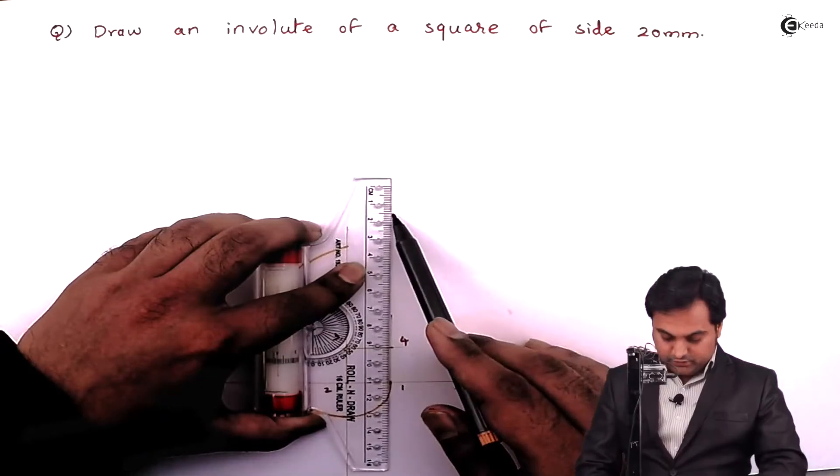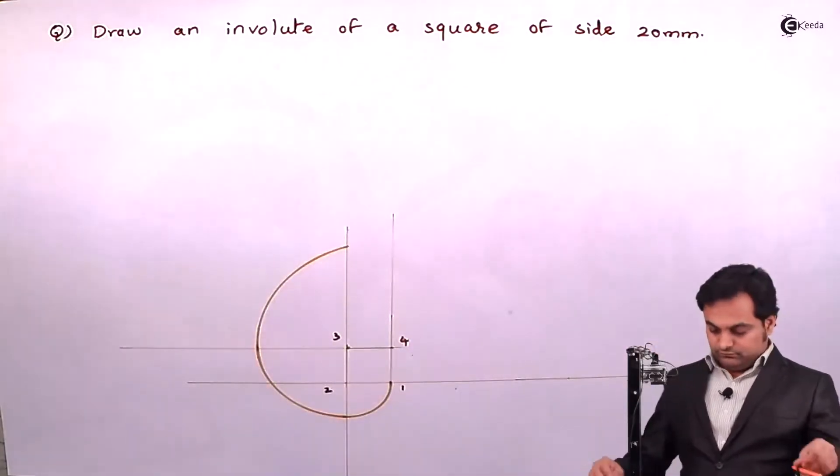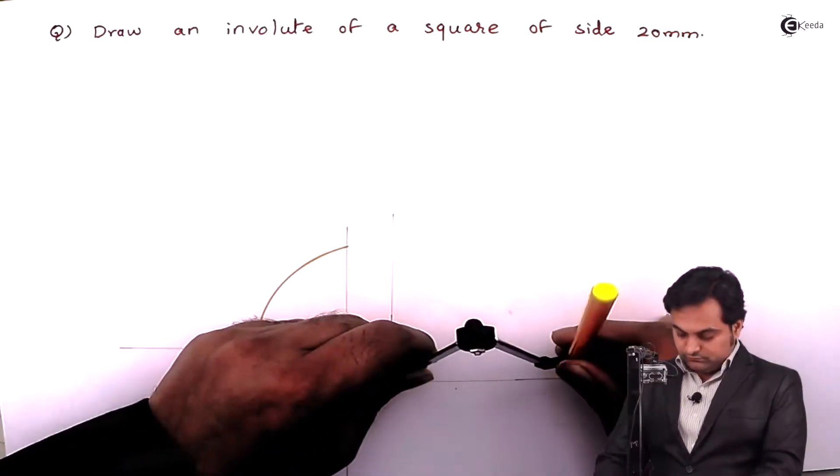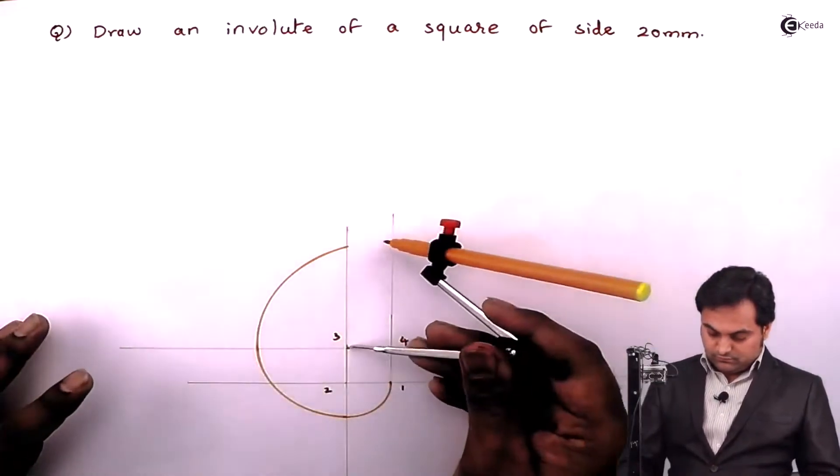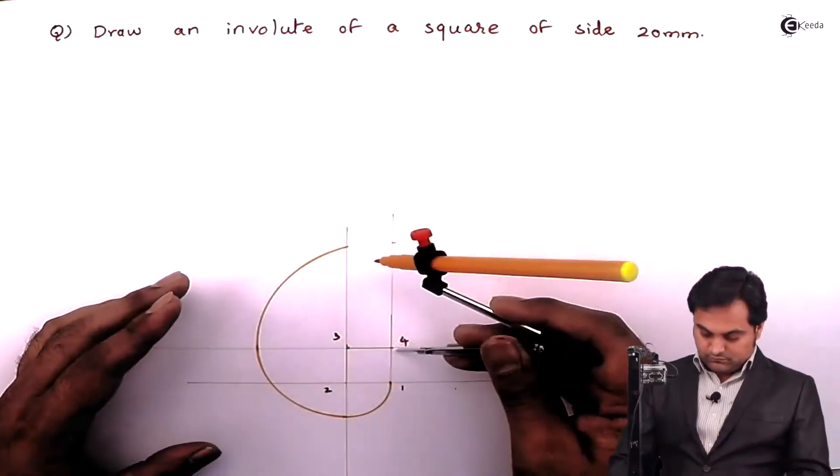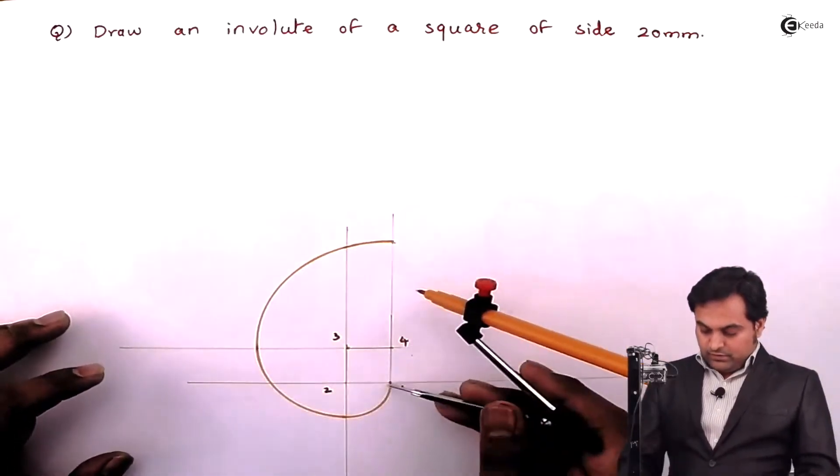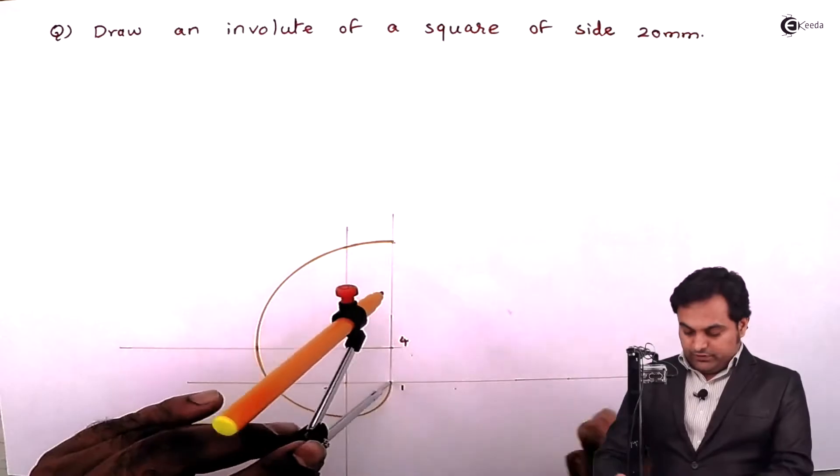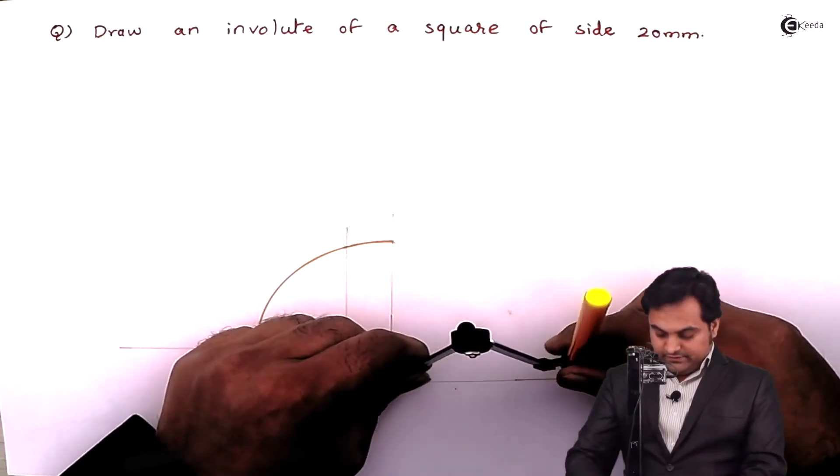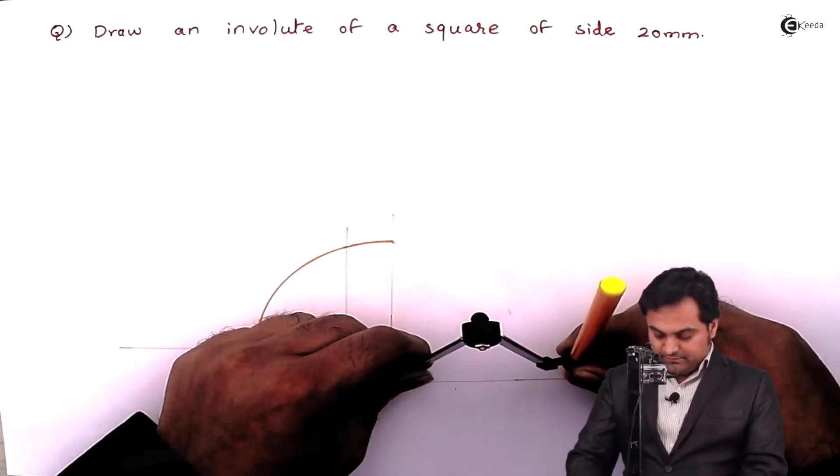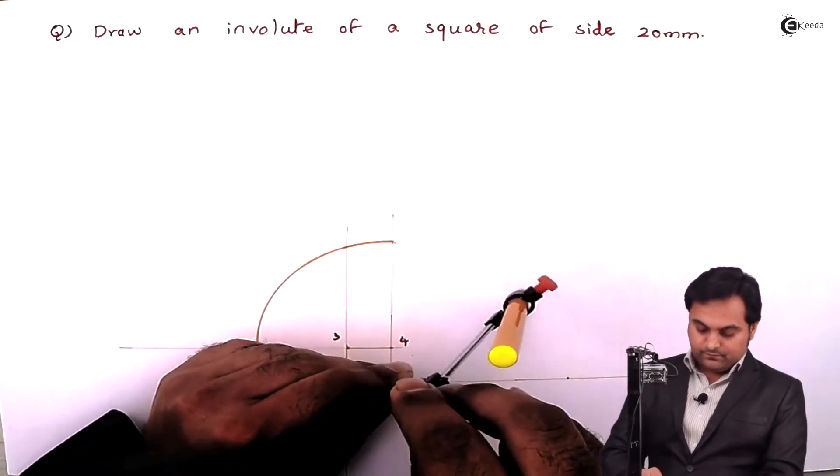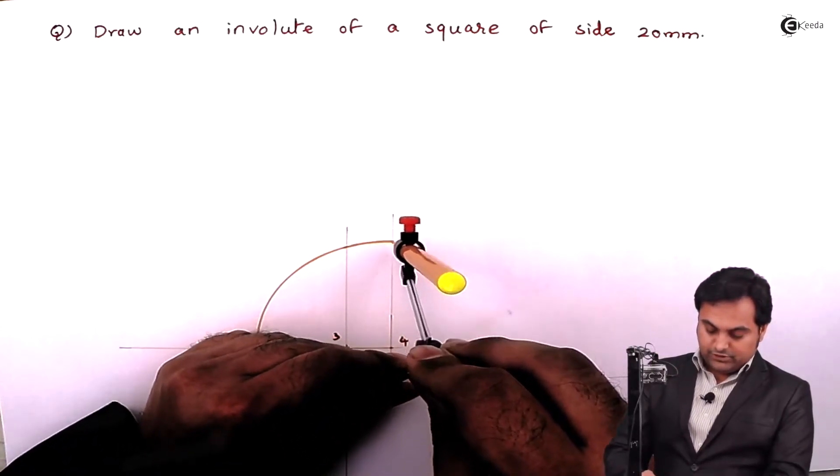I'll draw a light vertical line through here. Then keeping the center at point one and radius up to the perimeter which I had marked previously, I'll join these curves.